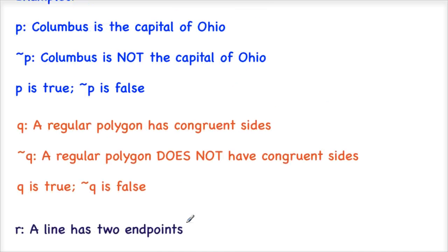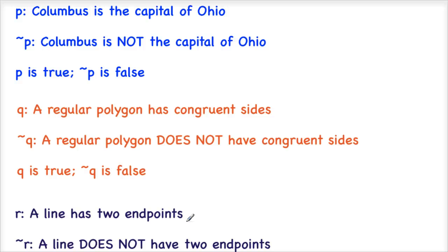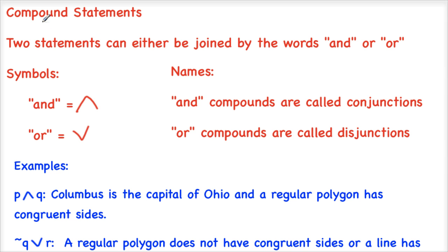Here are a few examples for you to write down. Make sure you have P, Q, and R written down because in the next slide I'll just refer to them using their symbols. Moving on — we can use separate statements to come up with what's called compound statements, where two statements are joined together. The two words we're going to use to join them are AND or OR.